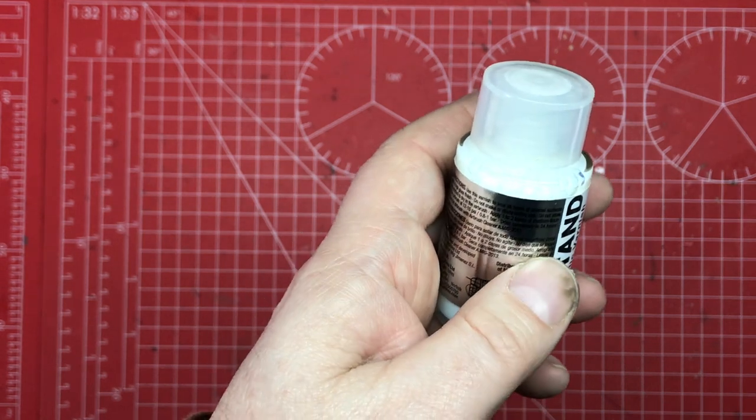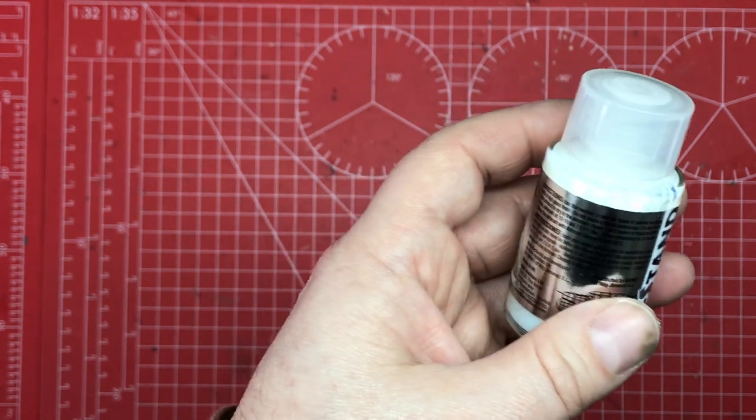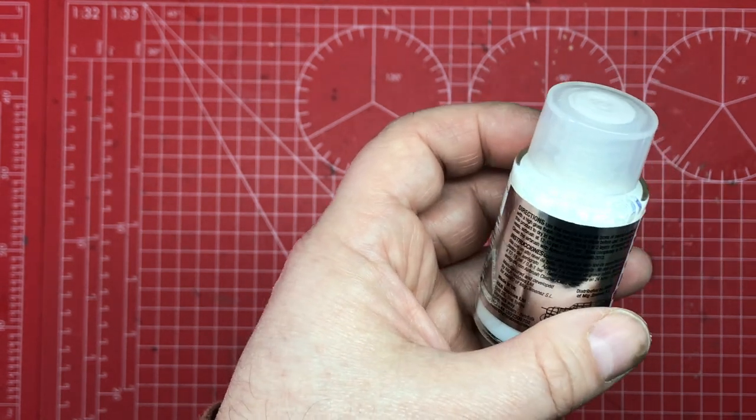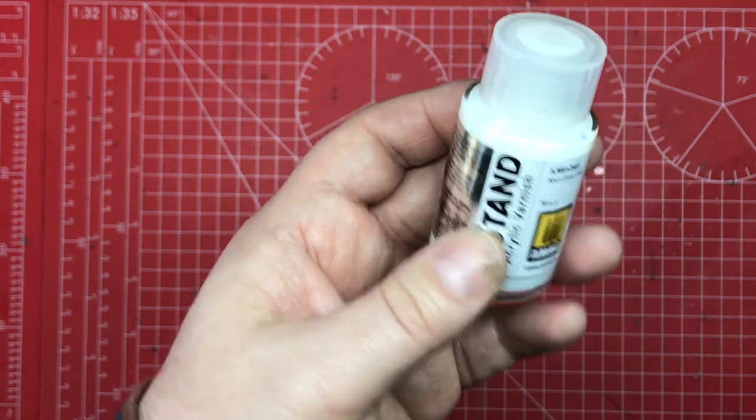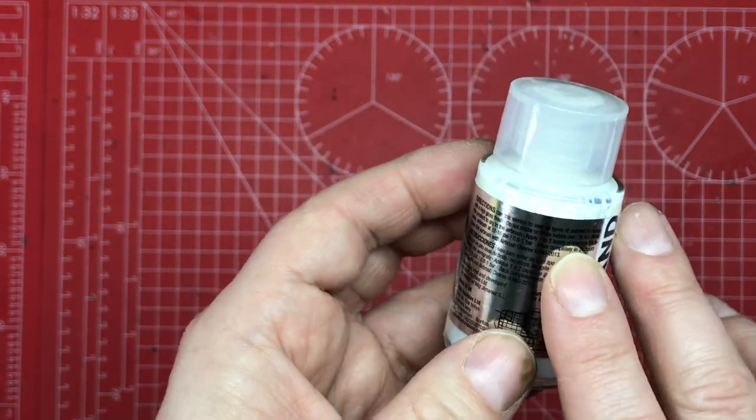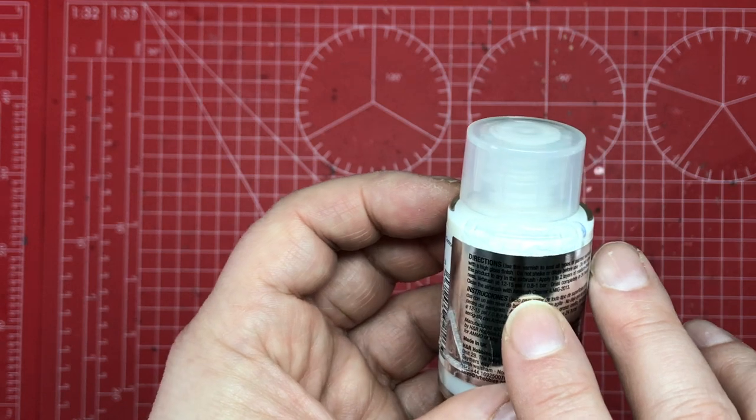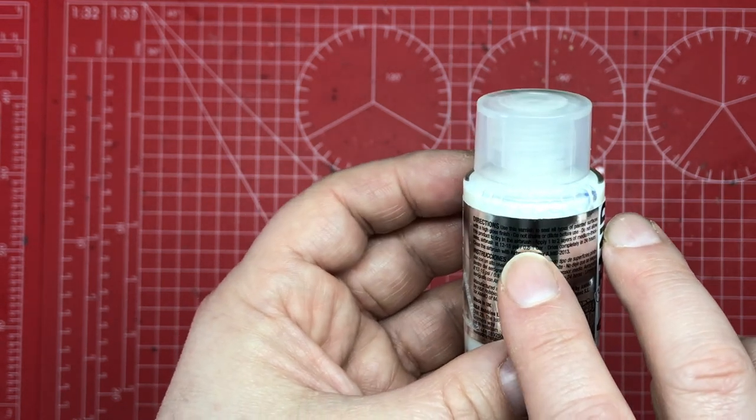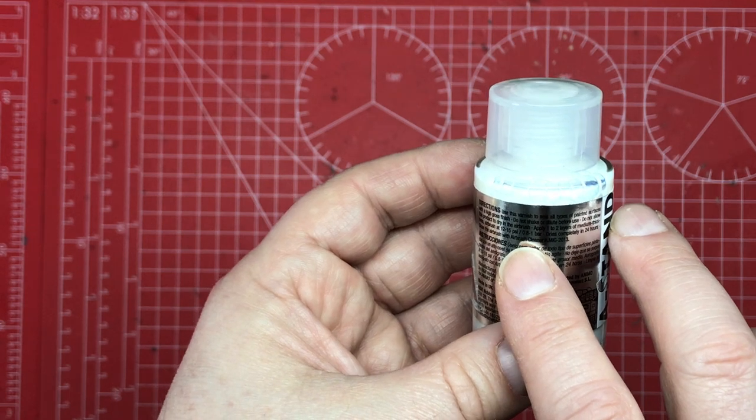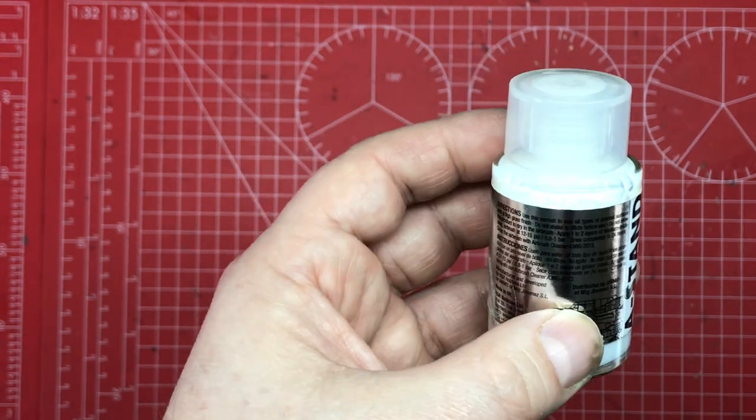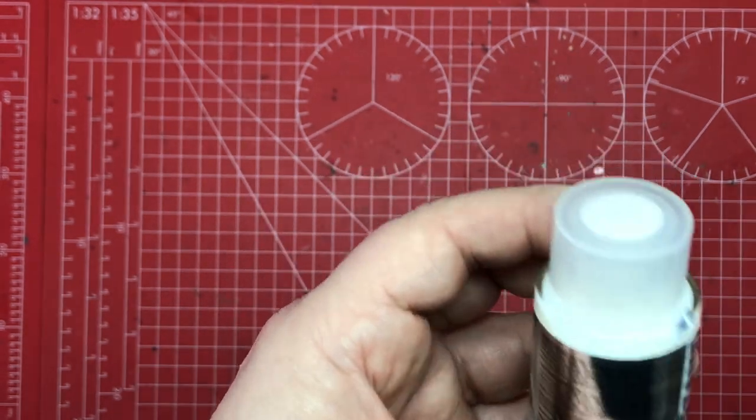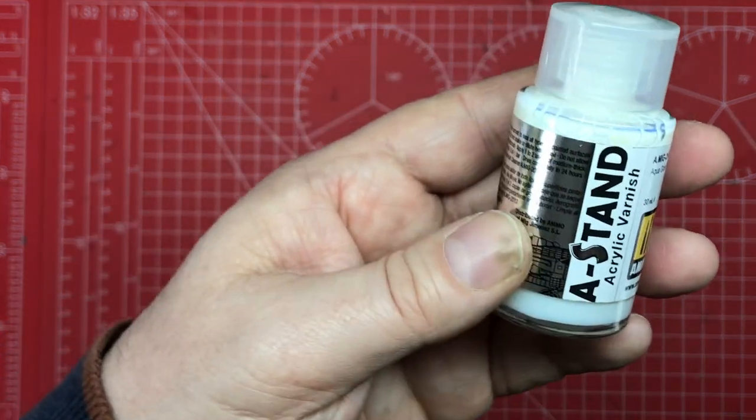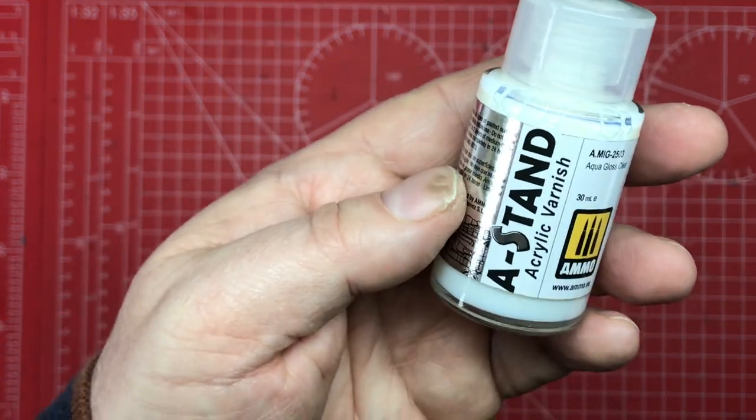Just somewhere between half and one bar, and that was about right. It does tell you on here that you want to have it at 12 to 15 psi or 0.8 to 1 bar, so I was at the lower end of that and it went on beautifully. Let me give you a couple of examples of products that I've used this on.